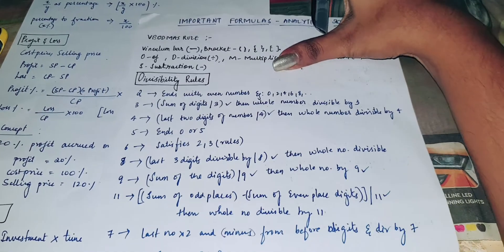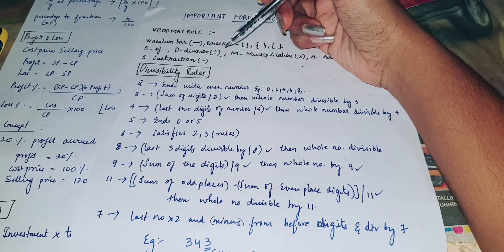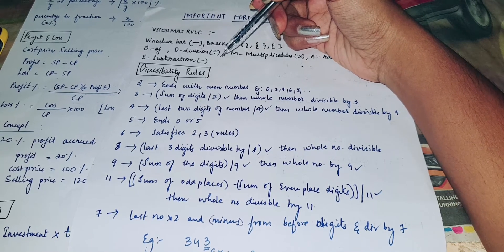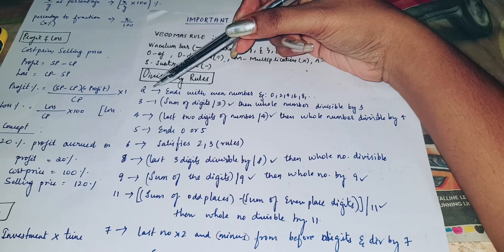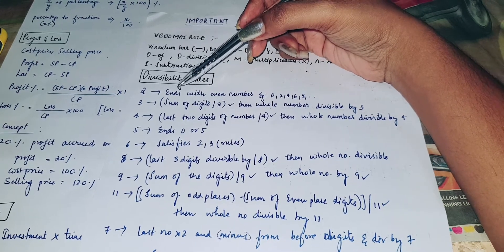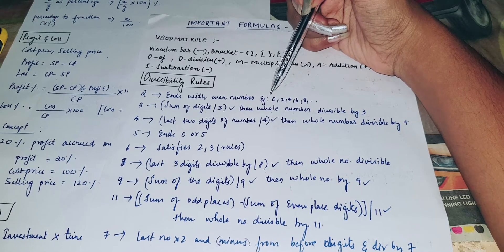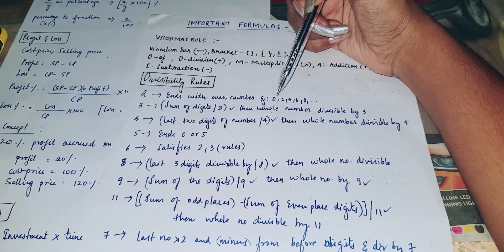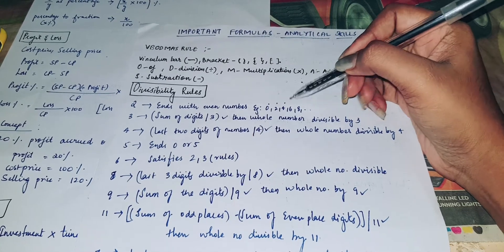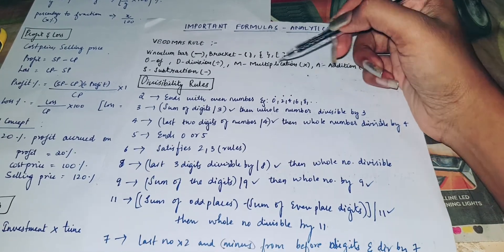Next, divisibility rules will be simple and will enhance your answers. Divisibility rule of 2: any number which ends with an even digit — 0, 2, 4, or any even digit — the whole number will be divisible by 2.